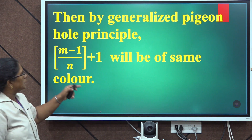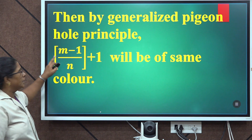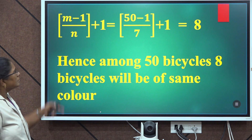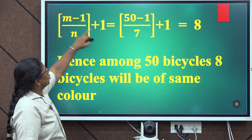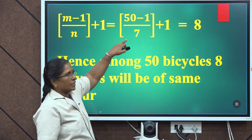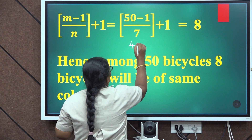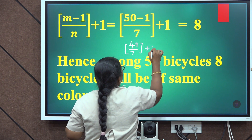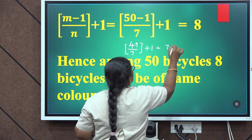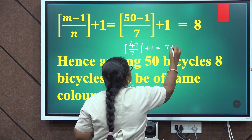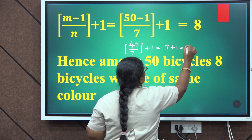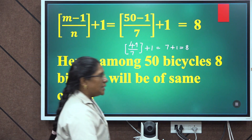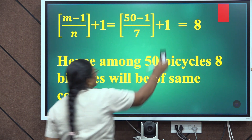By the generalized Pigeonhole Principle, at least the integral part of (M minus 1) by N, plus 1 will be of the same color. Substituting: M is 50, N is 7, so integral part of (50 minus 1) by 7, plus 1, equals integral part of 49 by 7, plus 1. Since 49 divided by 7 equals exactly 7, the integral part is 7, so 7 plus 1 equals 8. Hence we proved that among 50 bicycles, 8 will be of the same color.